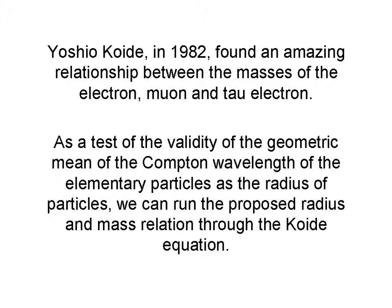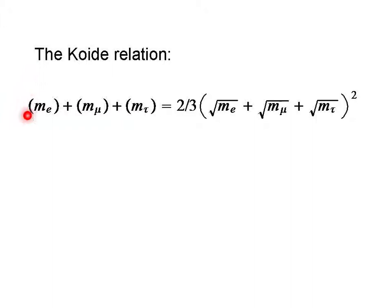The Koide relation says that if you take the mass of the electron, the muon, and the tau particle, and add them, they equal two-thirds times the square root of the mass of the electron plus the square root of the muon plus the square root of the tau, squared.